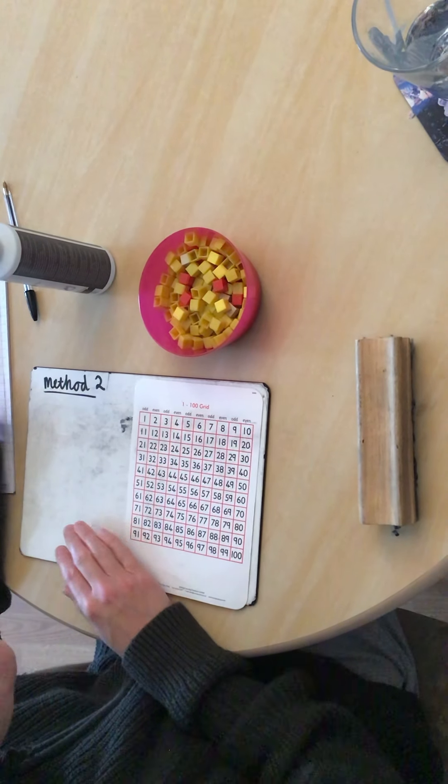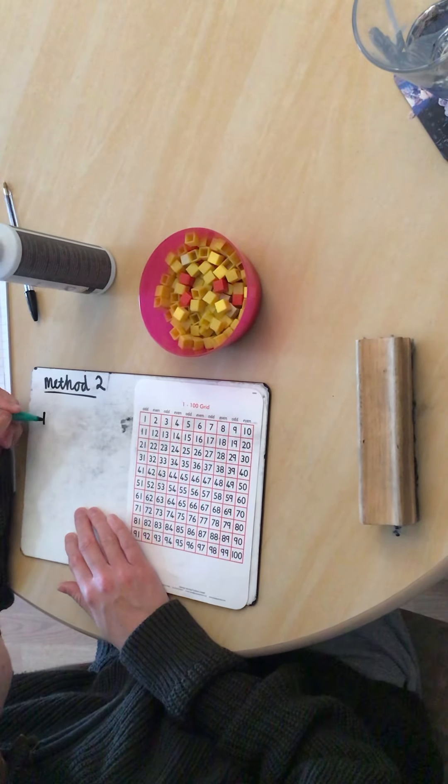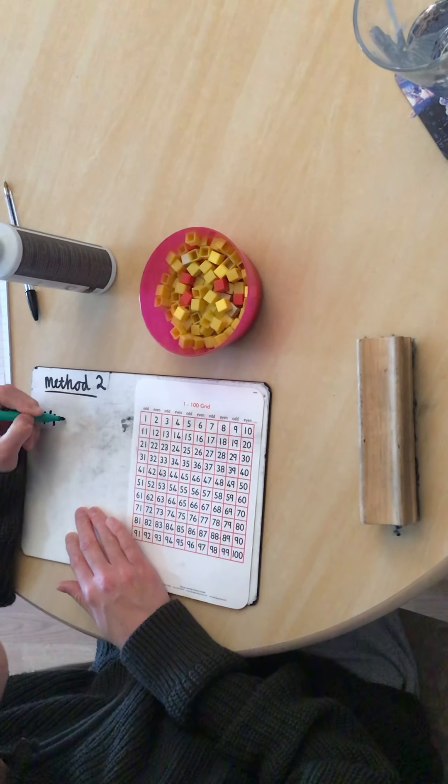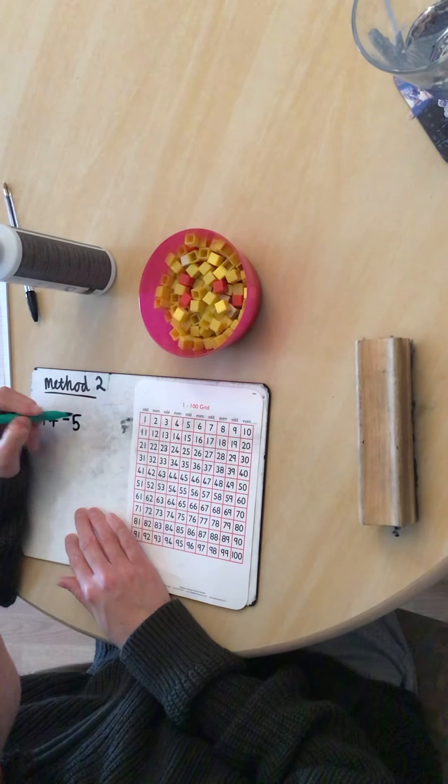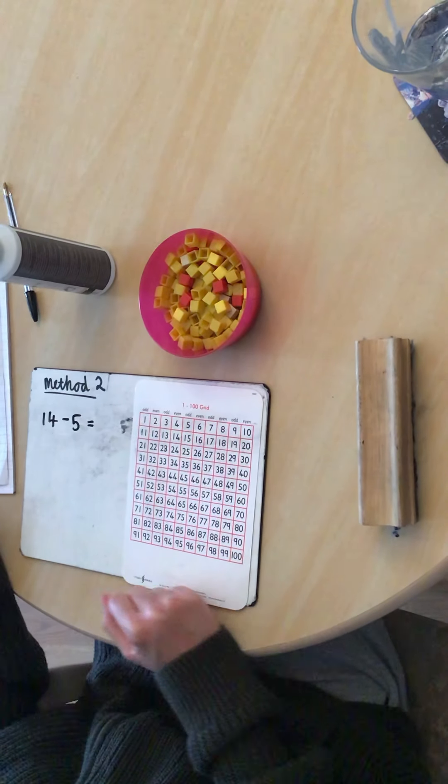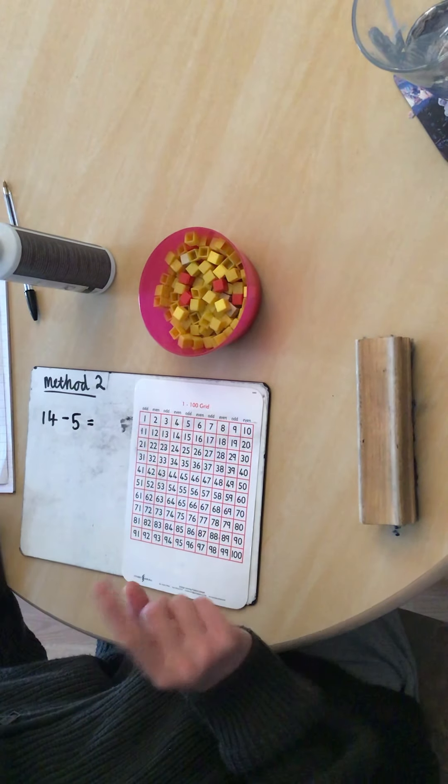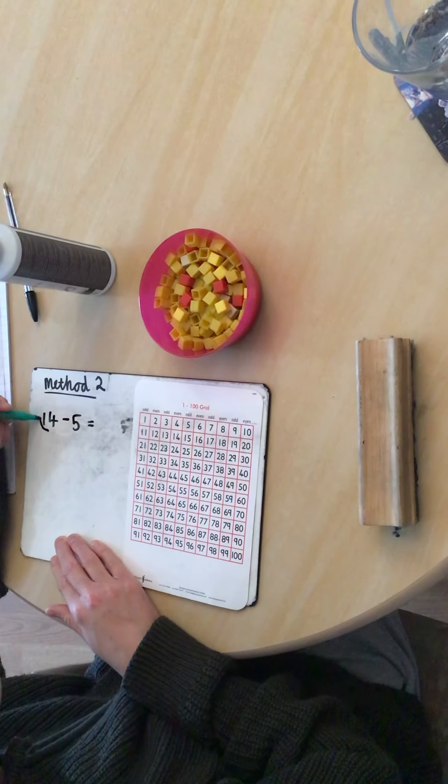And I've landed on 16. So 20 take away 4 is 16. Fantastic. Let's have a go at one more, children. And this time we're going to cross the tens barrier.